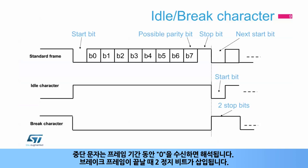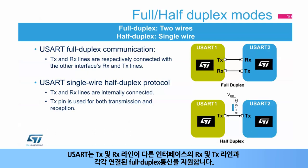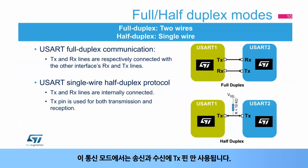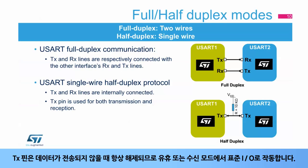This slide shows an example of 8-bit data frames configured with one stop bit. An idle character is interpreted as an entire frame of 1s, including the number of stop bits. A break character is interpreted as receiving 0s for a frame period, and at the end of the break frame, two stop bits are inserted. The USART supports full-duplex communication where TX and RX lines are respectively connected with the other interface's RX and TX lines. The USART can also be configured for single-wire half-duplex protocol where the TX and RX lines are internally connected, and only the TX pin is used for both transmission and reception.